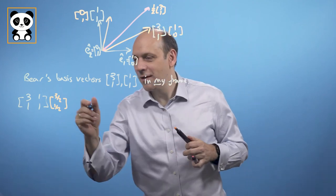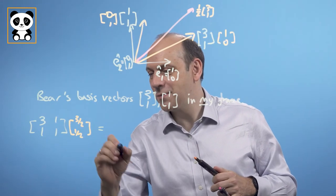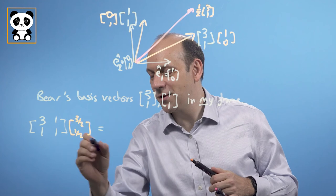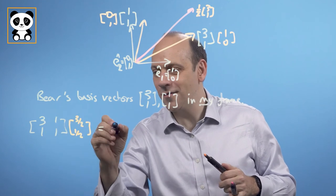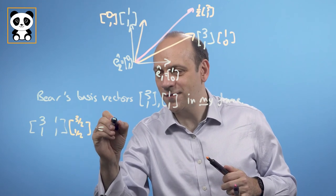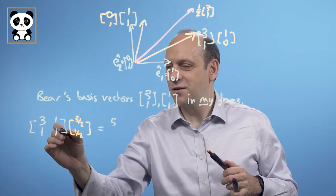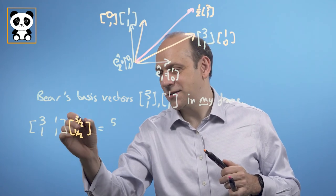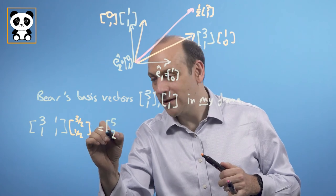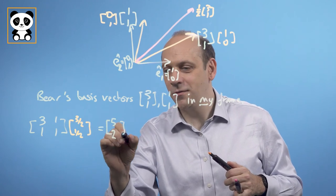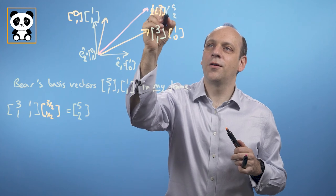So in my world, that's going to give me 3 times 3/2 plus 1 times 1/2, which is 9/2 plus 1/2 equals 5. And 1 times 3/2 plus 1 times 1/2 gives a total of 2. So that's the vector 5,2 in my world.